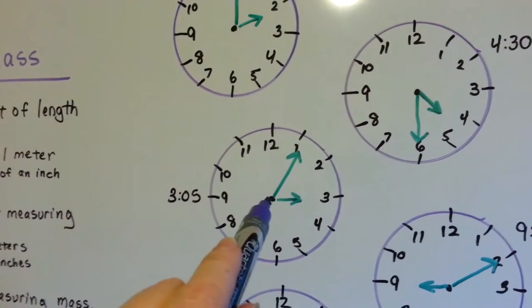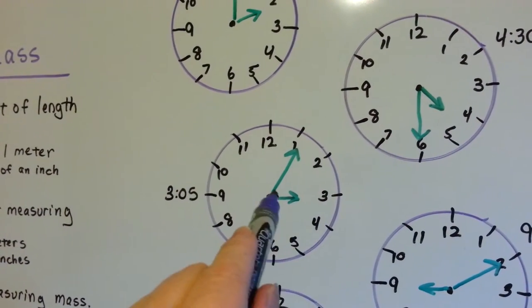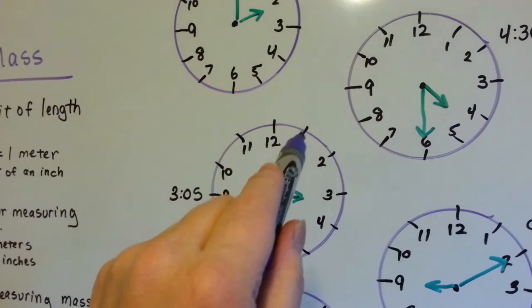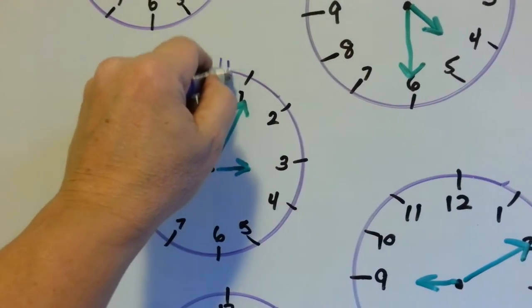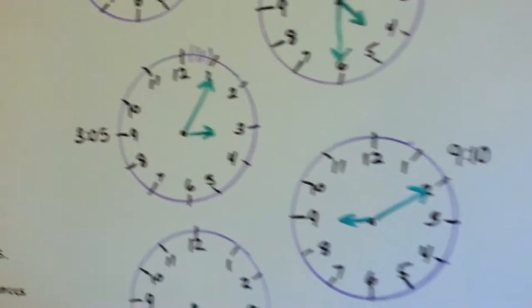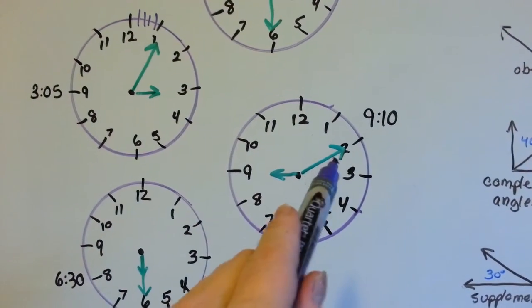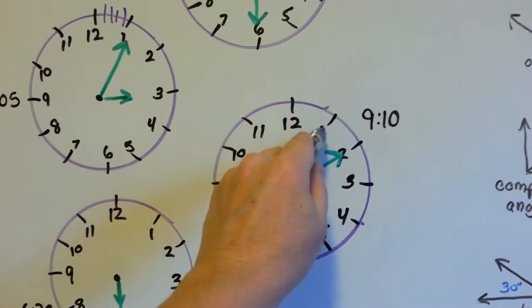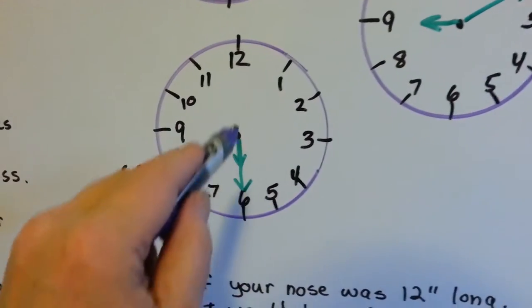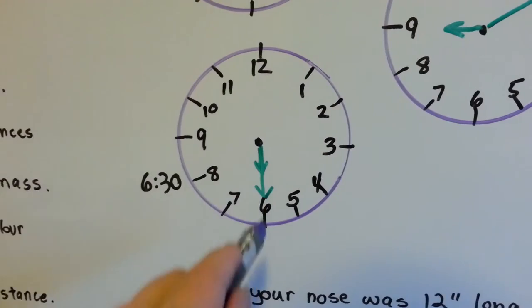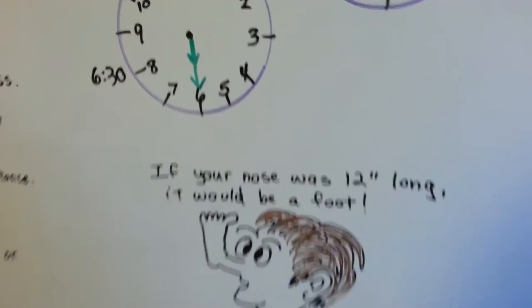This time would be 3:05 because the hour hand is on the 3 and the minute hand is pointing to the 1 and there's 5 minutes here. So, that would be 3:05. This would be 10 after 9 because it's 5 minutes, 10 minutes after 9 o'clock. And with both hands pointed to the 6 would be 6:30. So, here you go.